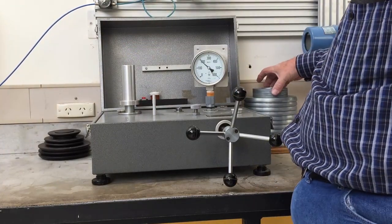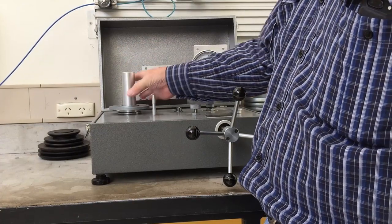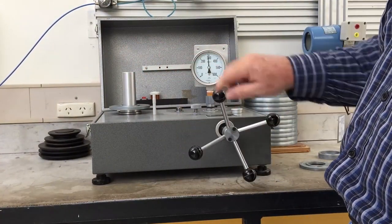Continue increasing the weights and record the pressure indicated on the pressure gauge, in this case at 100 kPa intervals.